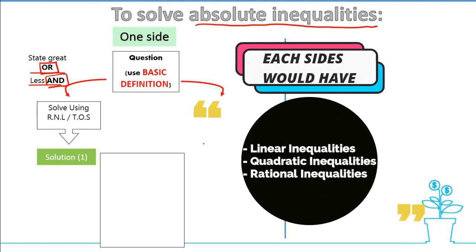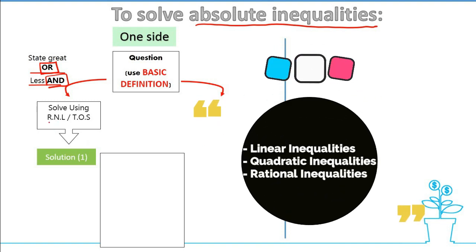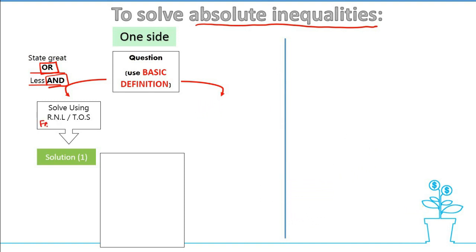After that you need to solve them separately. So in solving them separately we can use real number line, which is our first part, as well as table of signs. Once you've done with this you would have your first solution, and then the same goes with that, which is our second set of solution, which should be solution 2.